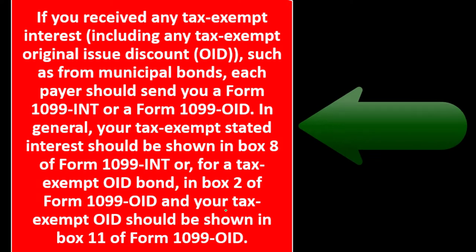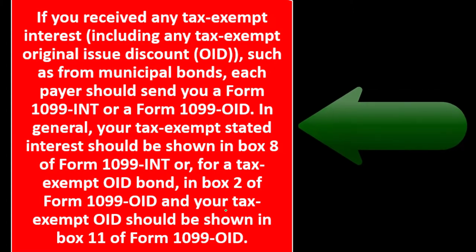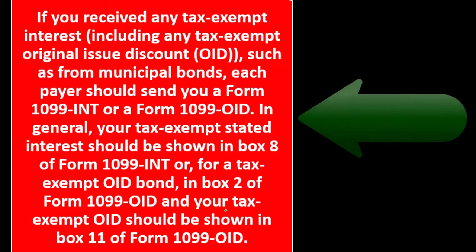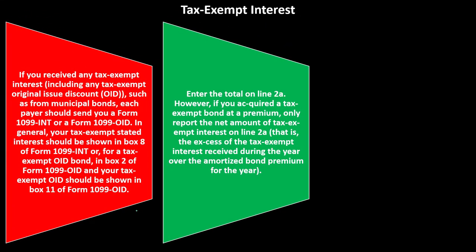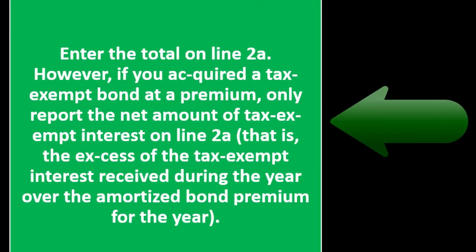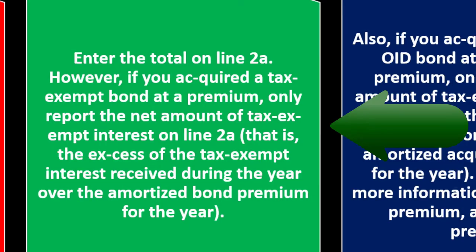If you receive any tax-exempt interest, including any tax-exempt original issue discount (OID) such as from municipal bonds, each payer should send you a Form 1099-INT or Form 1099-OID. Your tax-exempt stated interest should generally be shown in box 8 of Form 1099-INT, or for a tax-exempt OID bond, in box 2 of Form 1099-OID. If you acquired a tax-exempt bond at a premium, only report the net amount — the excess of tax-exempt interest over the amortized bond premium.